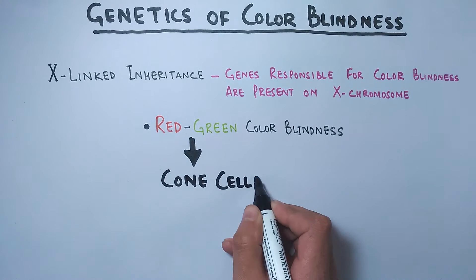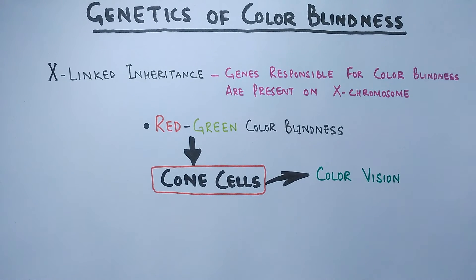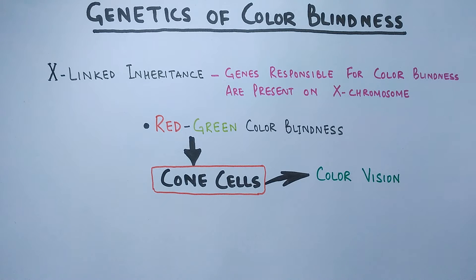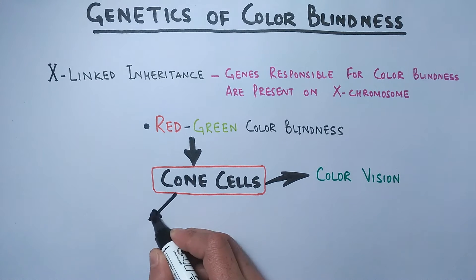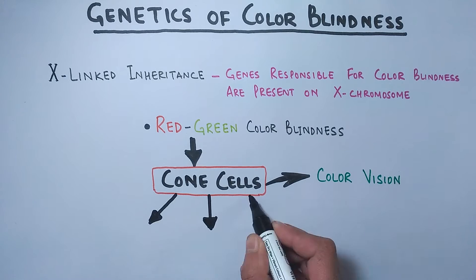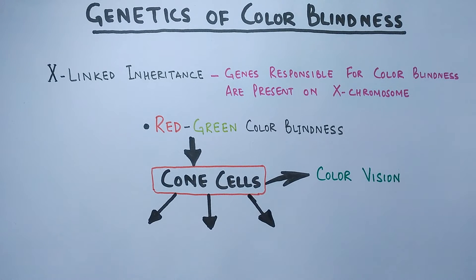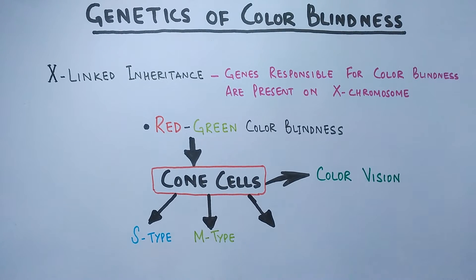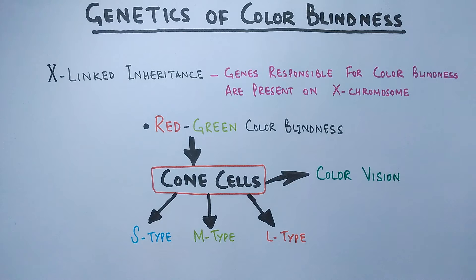In our retina, we have cone cells that perceive color vision. These cells absorb different wavelengths using pigments within them, and these pigments are called opsins — or photopsins. Cone cells are of three types: S-type cone cells, M-type cone cells, and L-type cone cells.